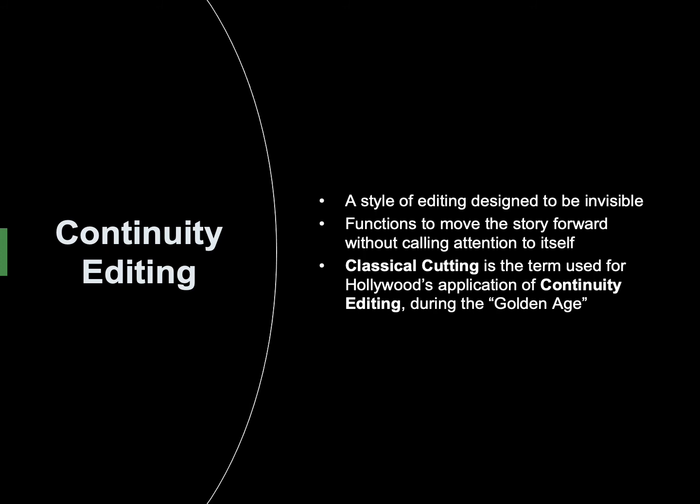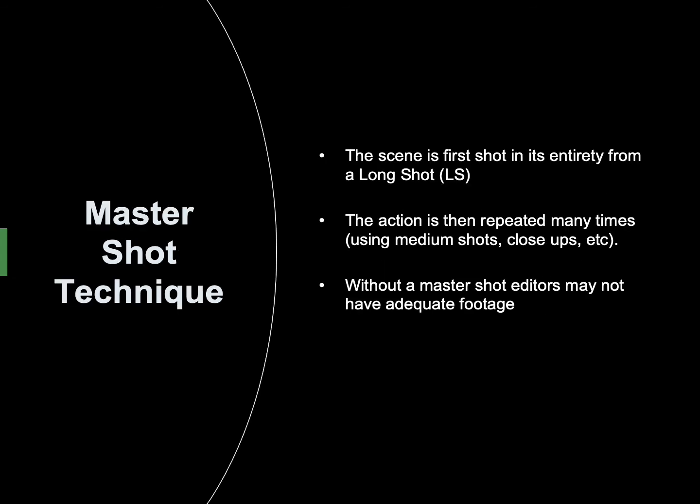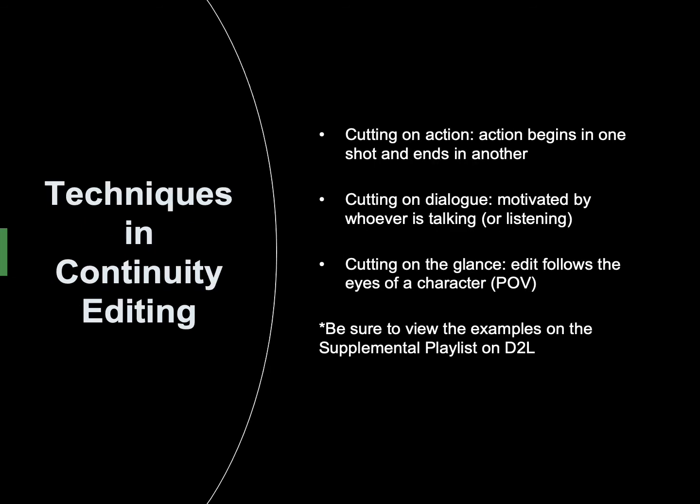Continuity editing is a style of editing designed to be invisible. It functions to move the story forward without calling attention to itself. Classical cutting is the term used for Hollywood's application of continuity editing during the Golden Age. The master shot technique involves first shooting the scene in its entirety from a long shot, then repeating the action many times from different angles. Without a master shot, editors may not have adequate footage.